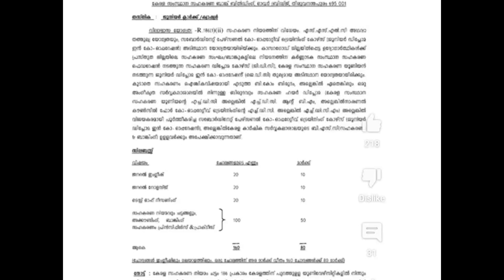We will see what we are going to see in general English. When we're talking about the most important question, the first question is 10 marks. The number of questions is about accounting, banking and principles, so you have to answer 100 questions for 50 marks.